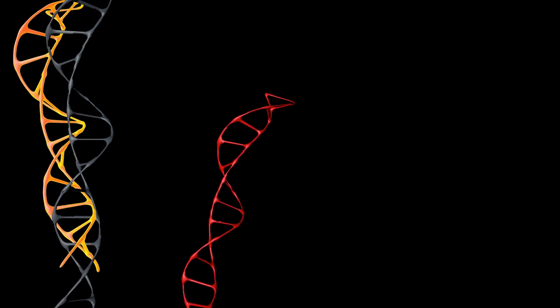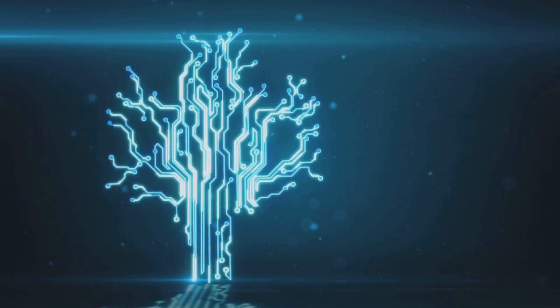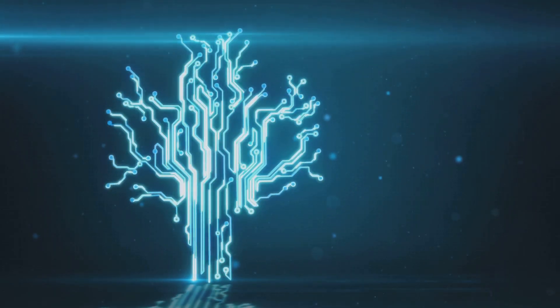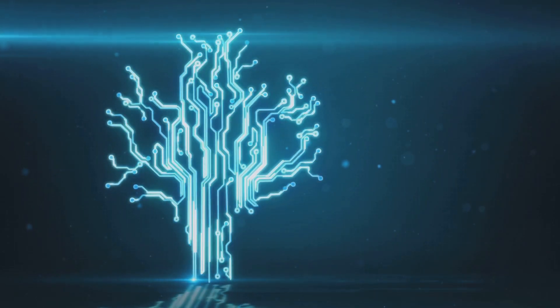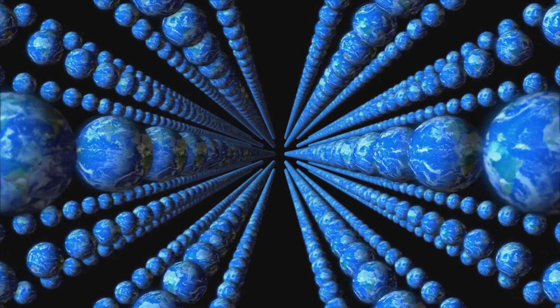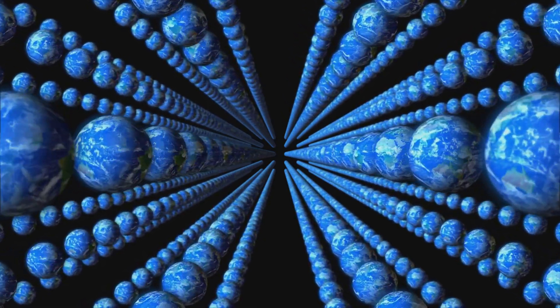Similarly, branching in multiverse theories is like mutation in evolution. Just as mutations create new branches in the tree of life, quantum events can make new universes, each different from its parent. This multiversal branching is key to the many worlds interpretation of quantum mechanics. This idea says every quantum measurement splits the universe with each possible outcome happening in a separate universe. This creates a huge, ever-growing multiverse where every possibility happens somewhere.